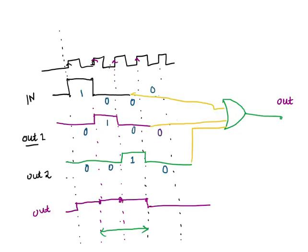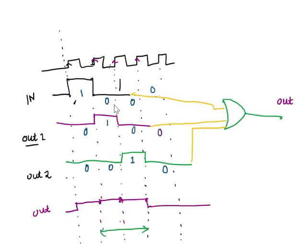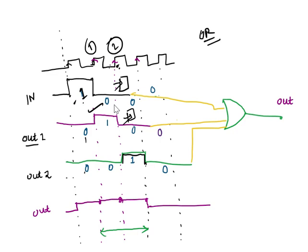So what we have to do here: this is the input. You pass this input to a flip-flop, and after the first clock we will get a delayed version. Then you pass this signal to another flip-flop, and at the second clock we will get another delayed output. Now, if we OR these three signals — for example, 1, 0, 0 OR'd gives 1; then 0, 1, 0 OR'd gives 1; then 0, 0, 1 OR'd gives 1.